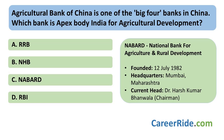Agricultural Bank of China is one of the big four banks in China. Similarly, which is the apex body in India for agricultural development? The answer is NABARD — National Bank for Agriculture and Rural Development. NABARD is set up as an apex development bank in India by the Government of India, with a mandate for facilitating credit flow for promotion and development of agriculture, cottage, and other village industries. It was established on 12th July 1982. The headquarters of NABARD are in Mumbai and the current chairman is Dr. Harsh Kumar Bhanwala.